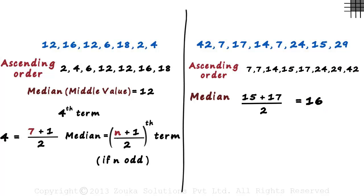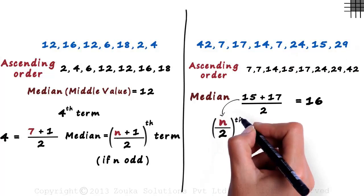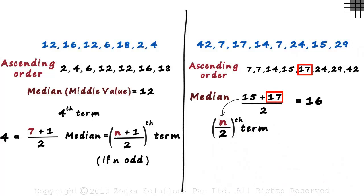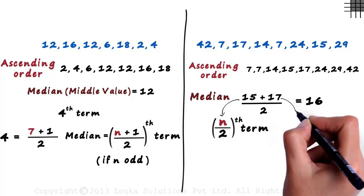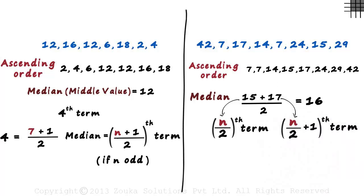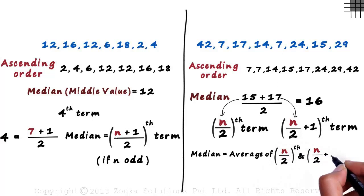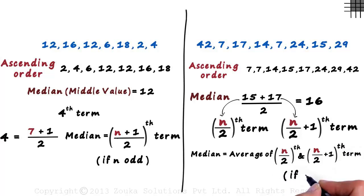But how do we generalize it? Which term is the median? Look at fifteen — it is the fourth term, and n is eight, so fifteen is the (n/2)th term. What about seventeen? Seventeen is the fifth term — it is the (n/2 + 1)th term. So the median is the average of the (n/2)th term and the (n/2 + 1)th term. But this is only when n is even.